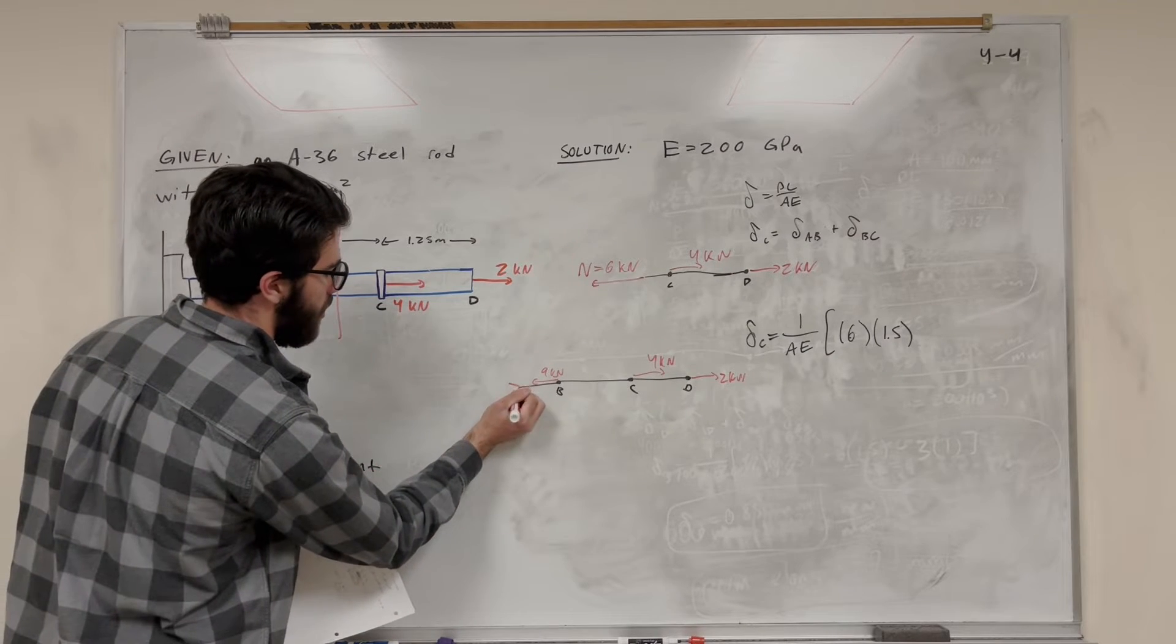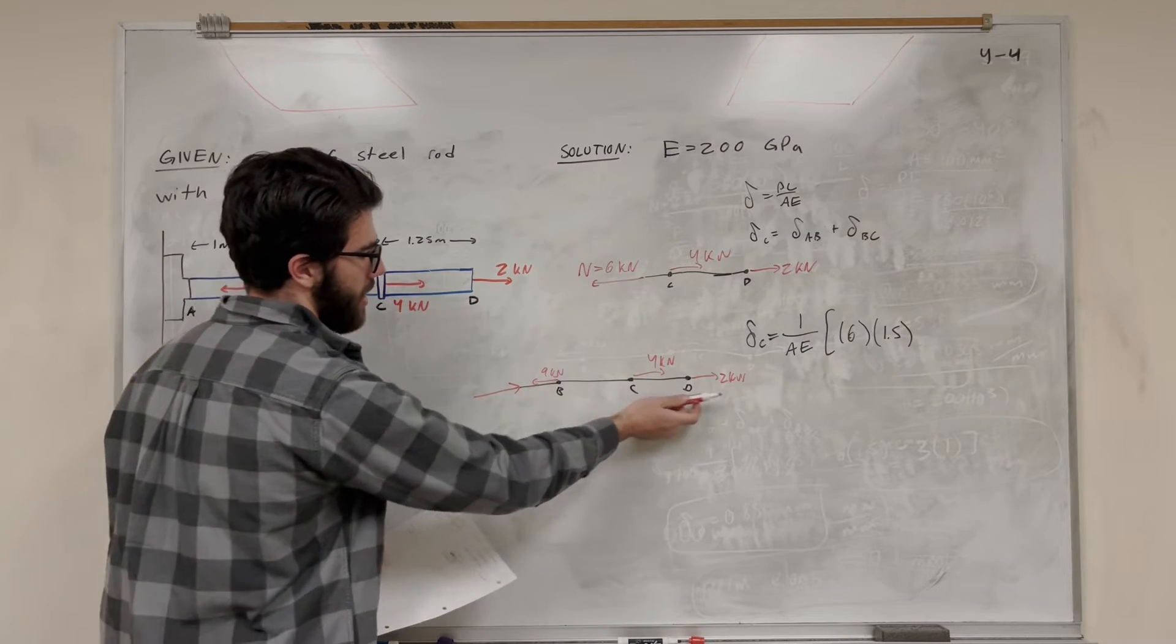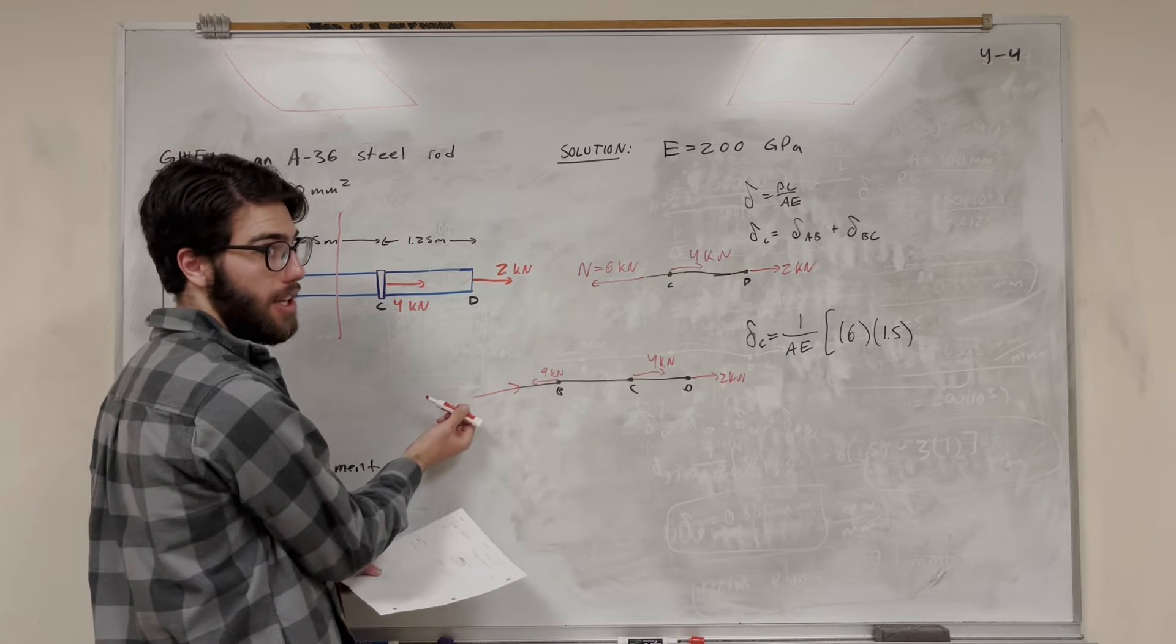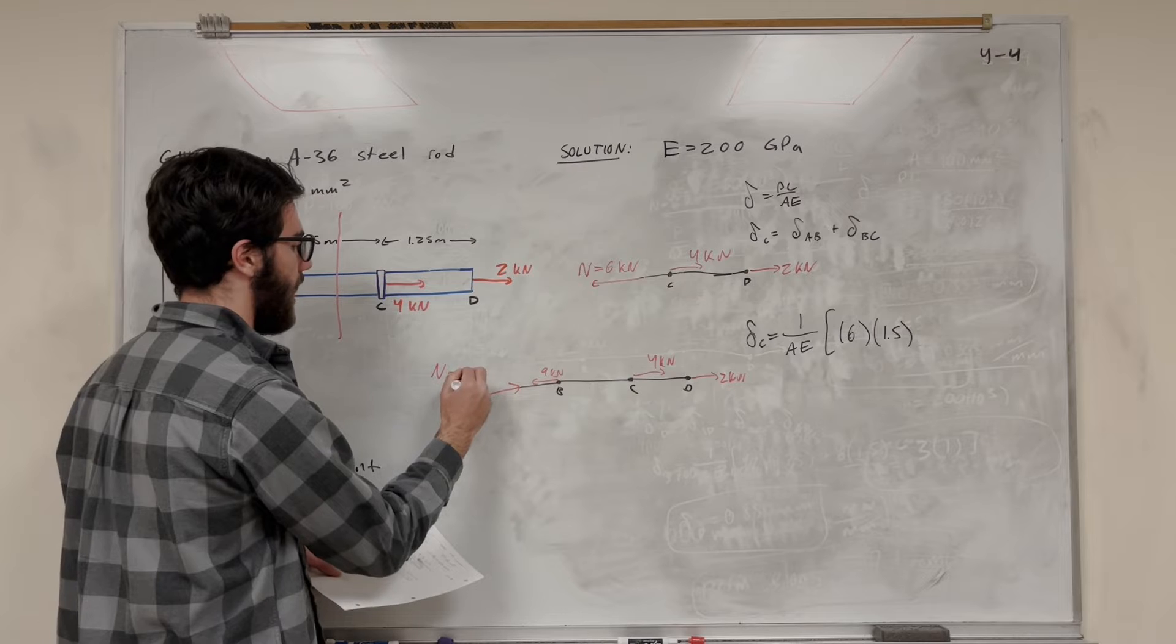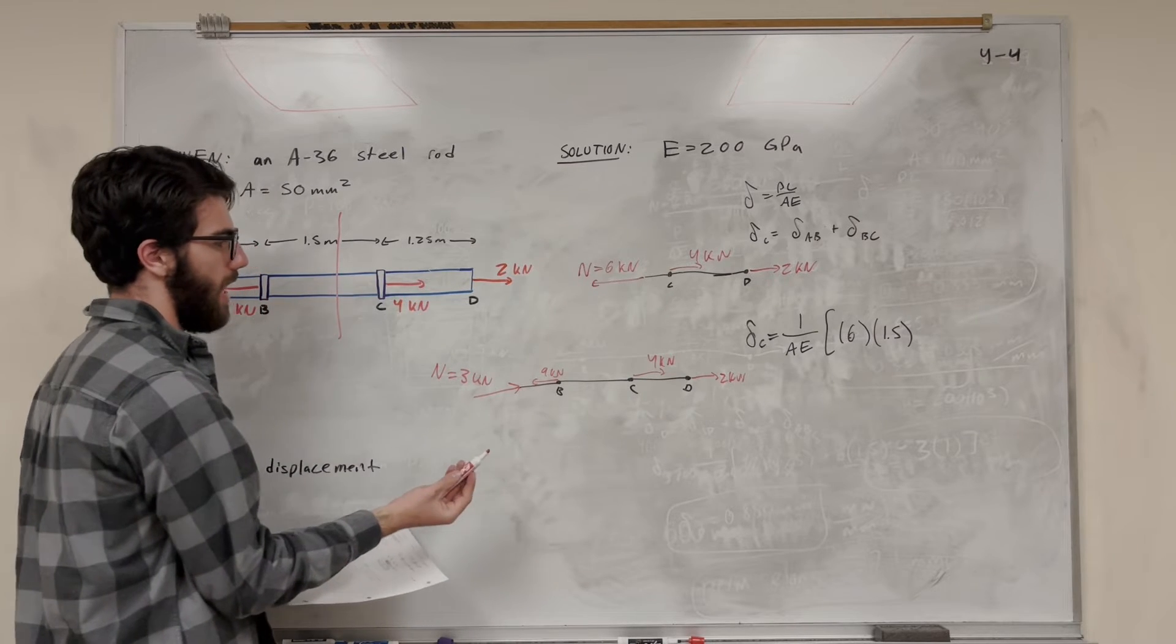So that 9 kilonewtons force is going to change our normal. So again, our normal is going to be here. And if we add them up, we know we have 6 kilonewtons going this way. But 9 kilonewtons pushing back this way. That means we're going to need another 3 kilonewtons pushing to the right to cancel that.